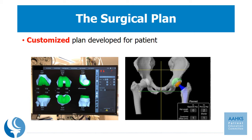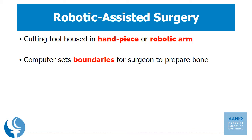Robotic-assisted surgery is a specific type of computer navigation where the surgical plan is carried out with the aid of a cutting tool. This tool is usually housed in a handpiece or robotic arm. The computer sets certain boundaries for the cutting tool so the surgeon can prepare the bone without taking any extra bone. Below are some examples.